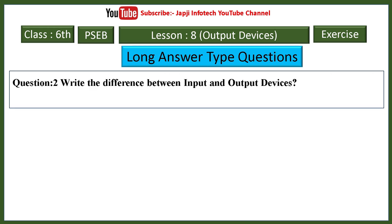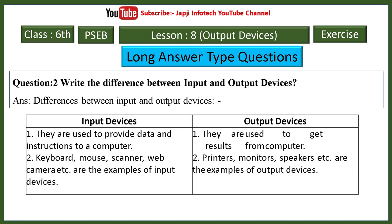Second question: difference between input and output devices. Input devices are used to provide data and instructions to a computer — examples include keyboard, mouse, scanner, web camera. Output devices are used to get results from the computer — examples include printer, monitor, speaker.